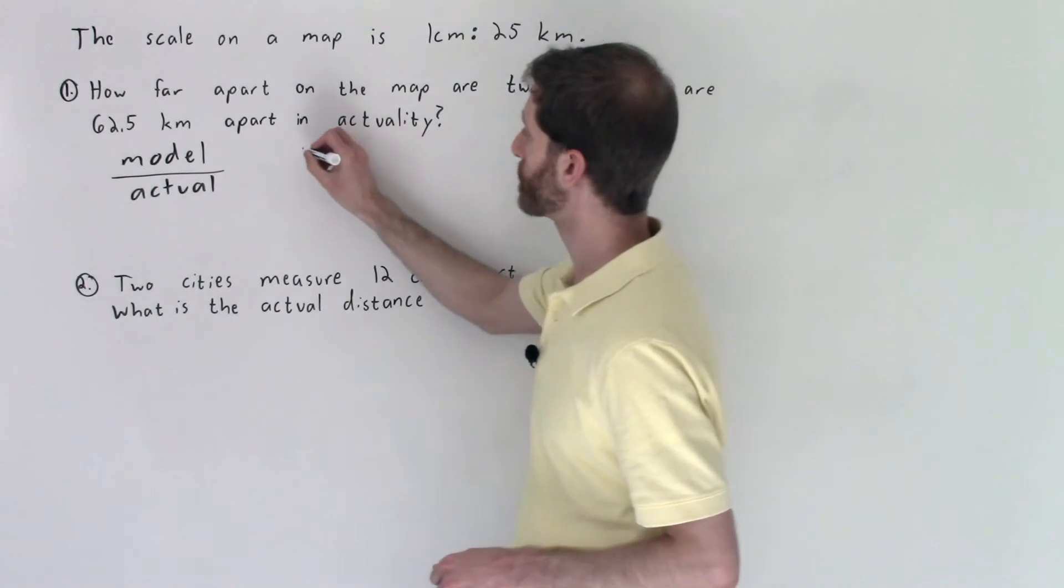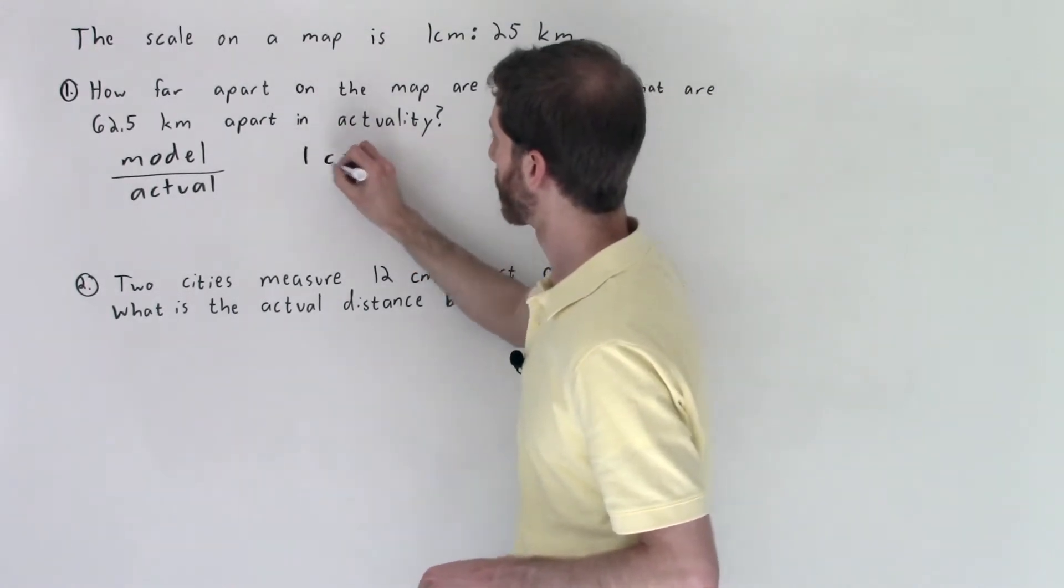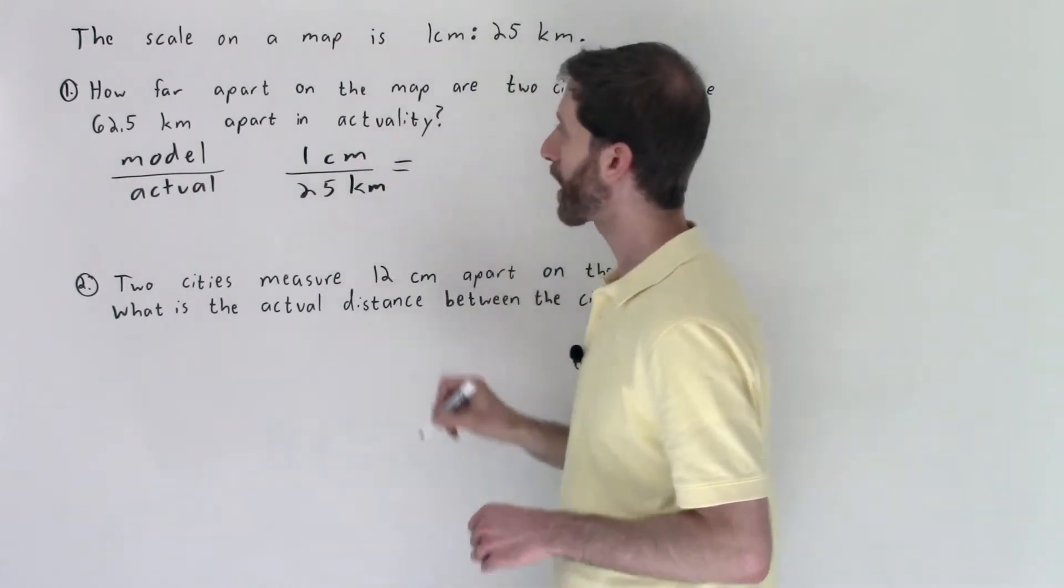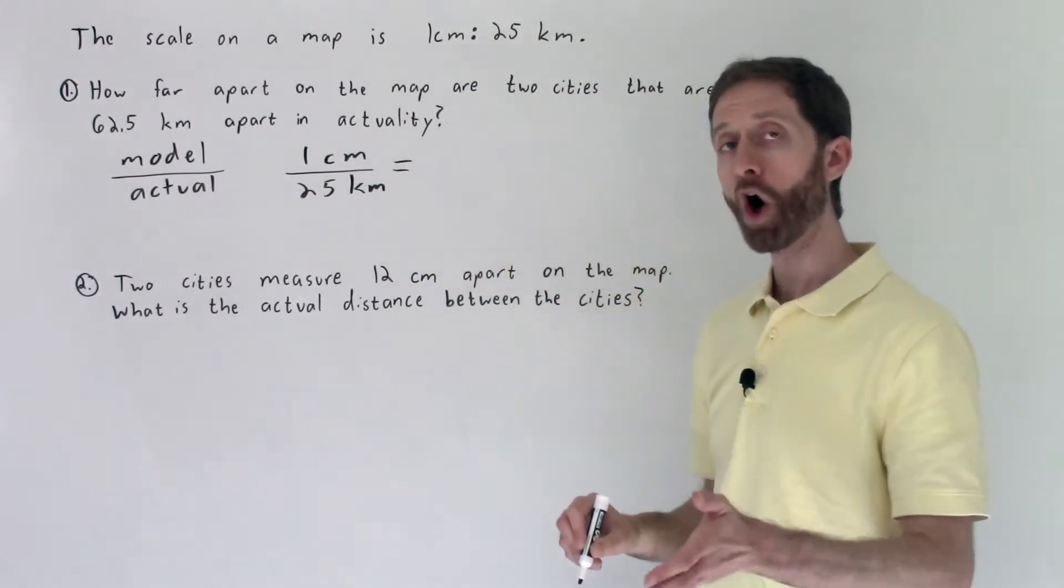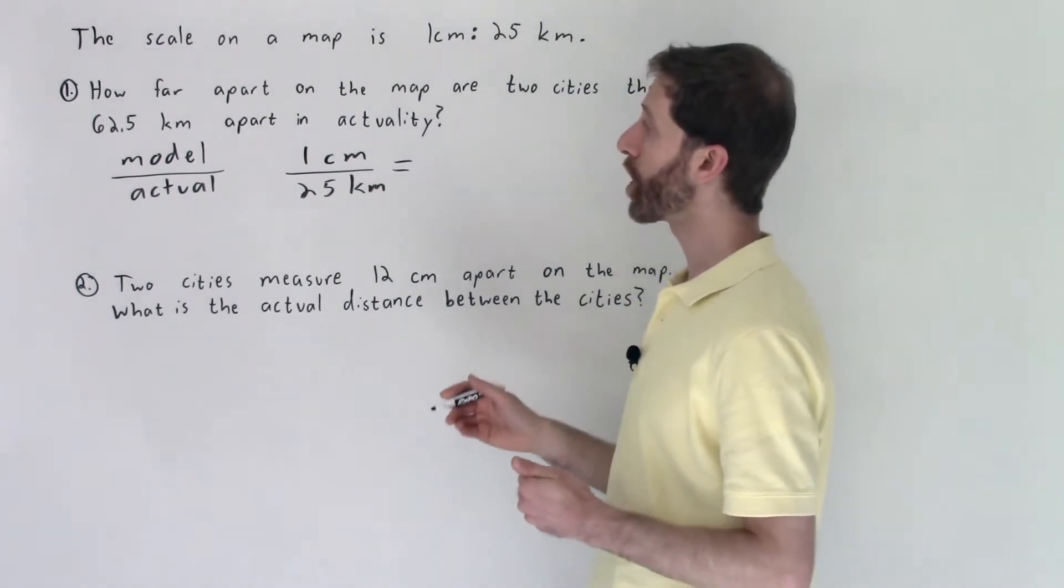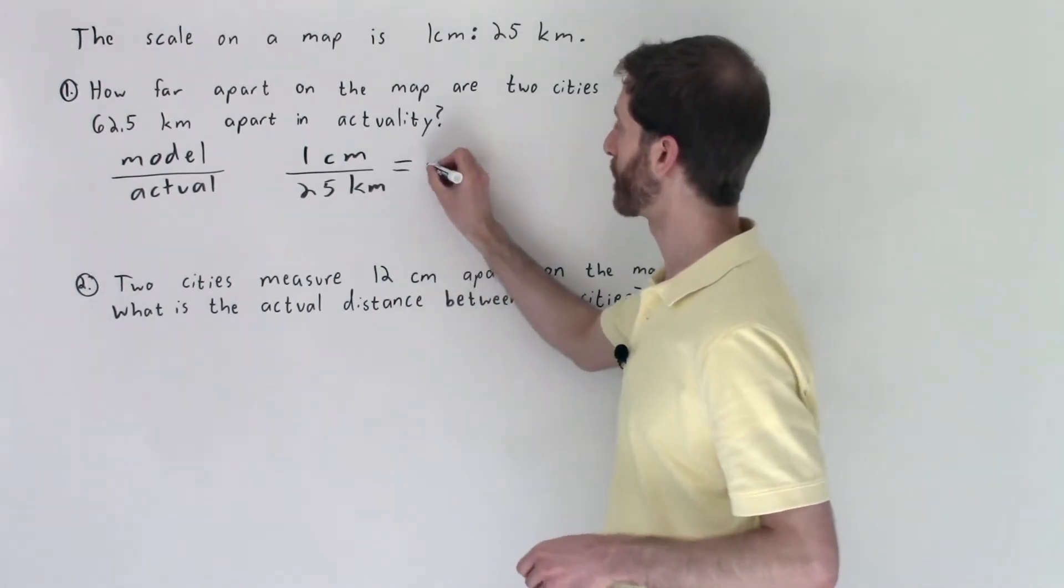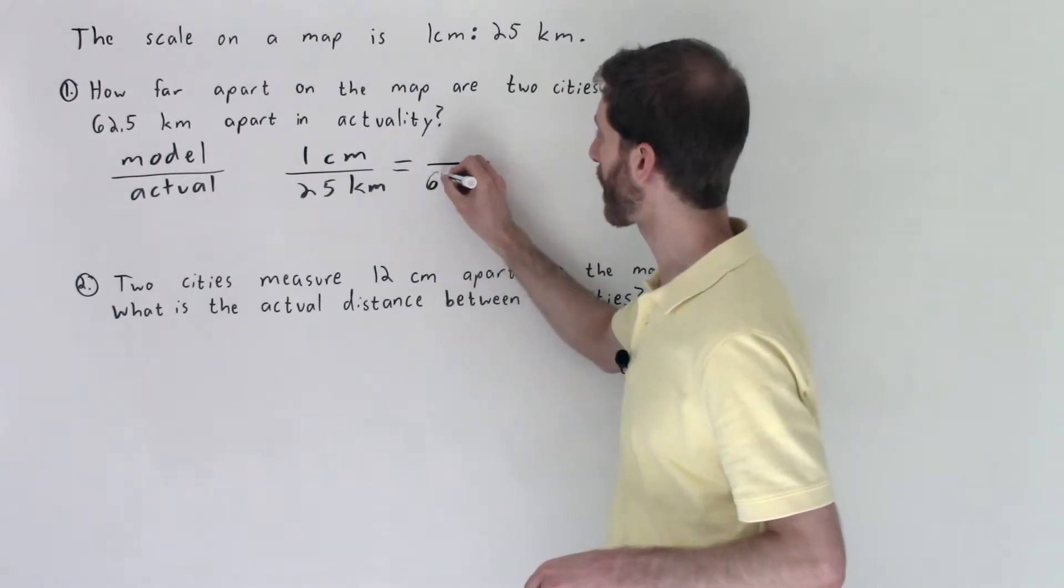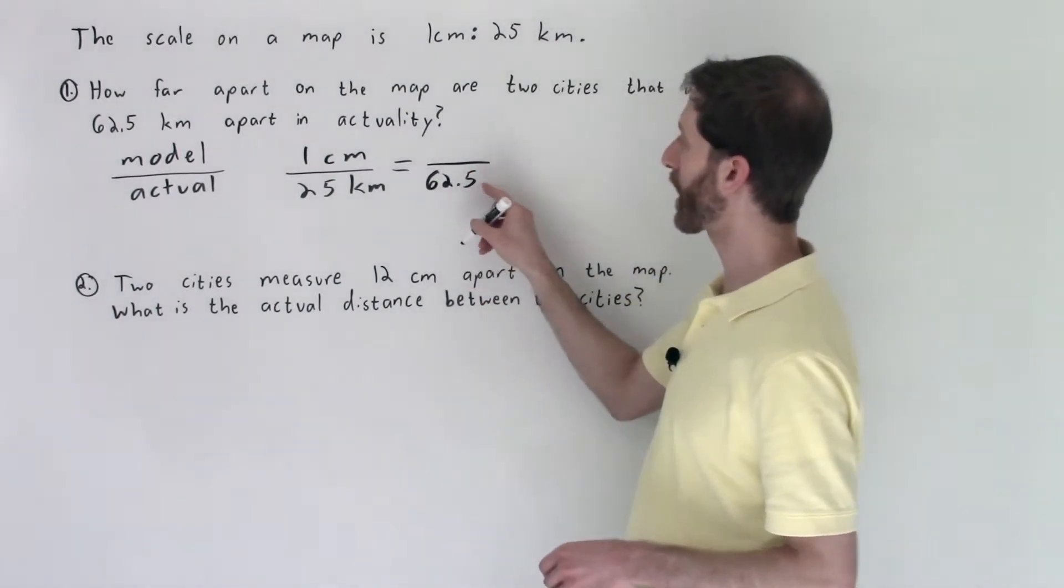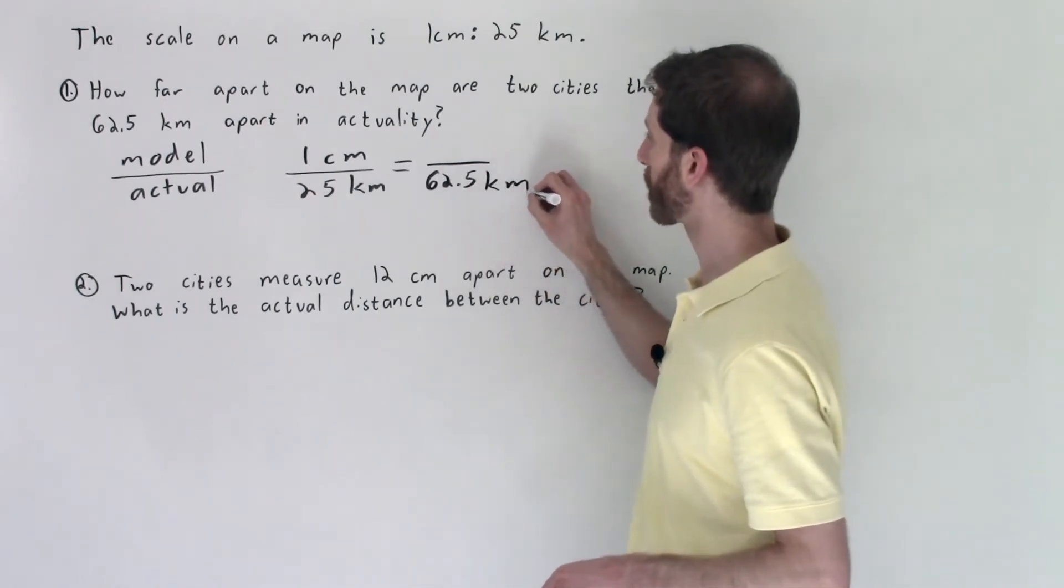The model is one centimeter compared to 25 kilometers. That ratio needs to be equal on the other side of this proportion that we're forming because we know that we have the actual of 62.5 kilometers. So that's 62.5 kilometers that the actual amount is on the other side.